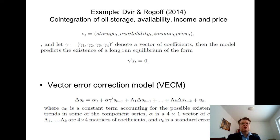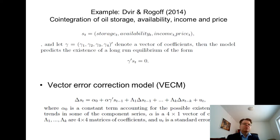As an illustration, I will walk through an example adopted from a study by Tvira and Rogov, who examined the co-integration of oil storage, oil availability, income, and price in the USA. We have four different time series: oil storage, oil availability, income referring to US GDP, and the market price of oil. We assume there exists some kind of long-run equilibrium between these variables, without claiming any specific direction of causality — storage might affect availability, but availability also affects storage, and all variables depend on income and price.